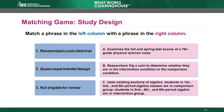That means the last option in the left column matches to choice A, which examines the fall and spring test scores of the seventh grade physical science class. This is an ineligible design because there is no comparison group. The seventh grade science class represents one group. The study looks at that same group before and after the intervention, which researchers call a pre-post design. Scores might go up for many reasons not related to the intervention, so pre-post designs with no comparison group are not eligible for review under the WWC group design standards.